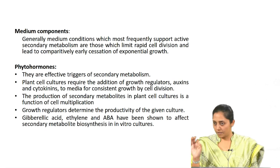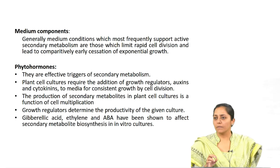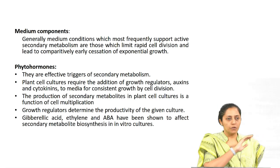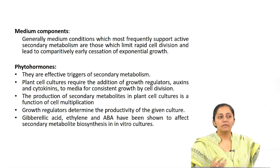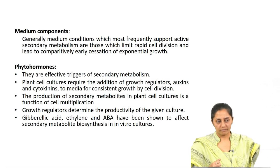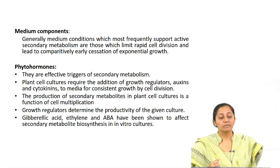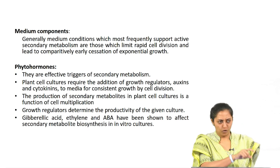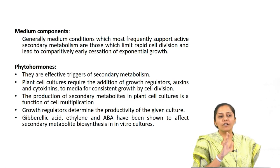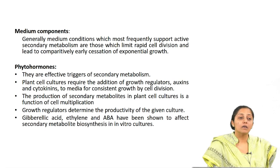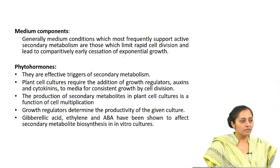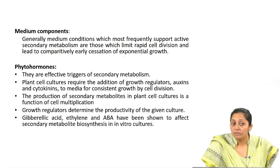When optimizing for maximum biomass using single-factor experiments, the range selection is critical. If the range is not right, you will see a continuously increasing or decreasing trend — a linear model — which is not ideal for optimization. You need a bell-shaped curve with a convergence point. This corresponds mathematically to a 2nd or 3rd degree polynomial with a converging optimum.